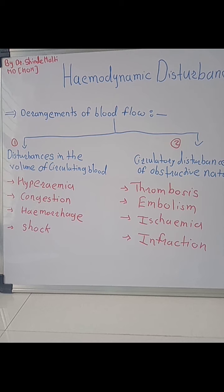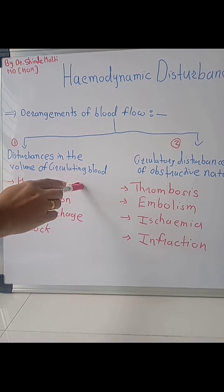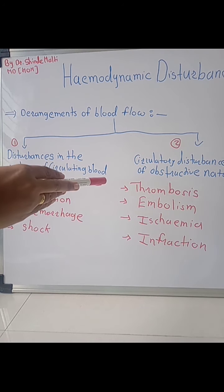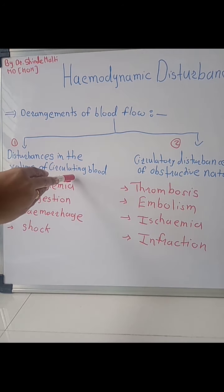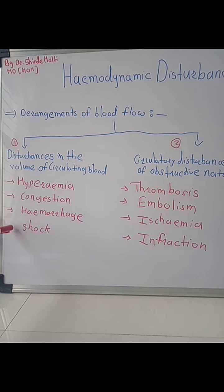The derangement of blood flow, also called hemodynamic disturbances, is broadly classified into two headings: disturbances in the volume of circulating blood, and circulatory disturbances of obstructive nature. Disturbances in the volume of circulating blood include hyperemia, congestion, hemorrhage, and shock.